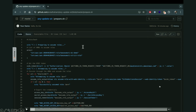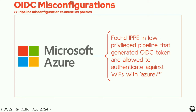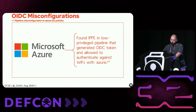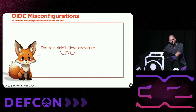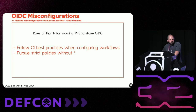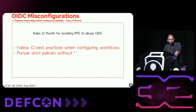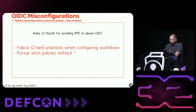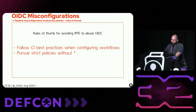Some nice disclosure — this is from last year already. I was able to find this technique a month ago in Azure, and it allowed access to basically all the identities that had 'Azure/*.' Nice technique. Rule of thumb to avoid this: one — for CI, please follow the best practices. My team has released plenty of guides on how to harden your pipelines. The second thing — pursue policies that are not with wildcards as much as you can, or use other safe claims to assert identities.